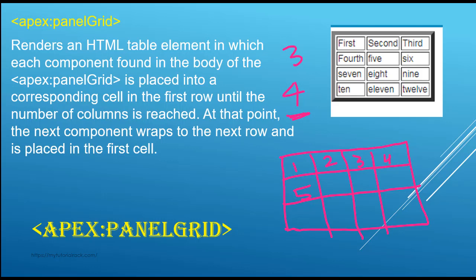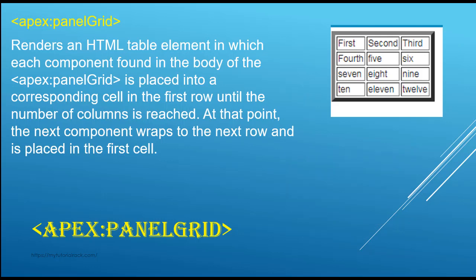So this is the purpose of the panel grid. It arranges your elements in a table-like structure where you specify the total number of columns. If the total number of columns is three, the fourth element goes to the next row. That is what the panel grid does.